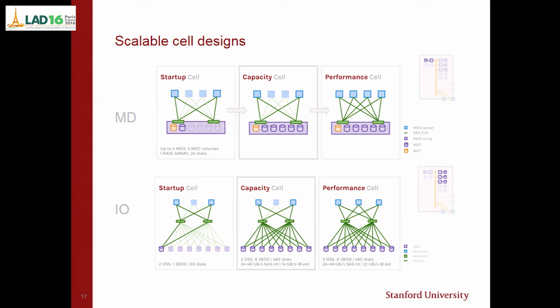This is an overview of the cell design. The MD cells consist of regular RAID arrays with two MDS connected to two controllers and just a few storage units that we can expand. We can also add MDSes and MDTs, and if needed, add another MD cell. For the IO cell, the startup consists of two OSSes with two SAS switches and one JBOD. We can then expand the number of JBODs up to eight, and if needed, add another server for more performance.